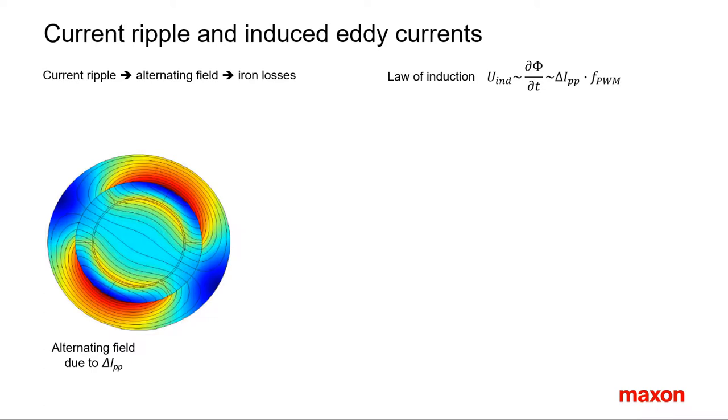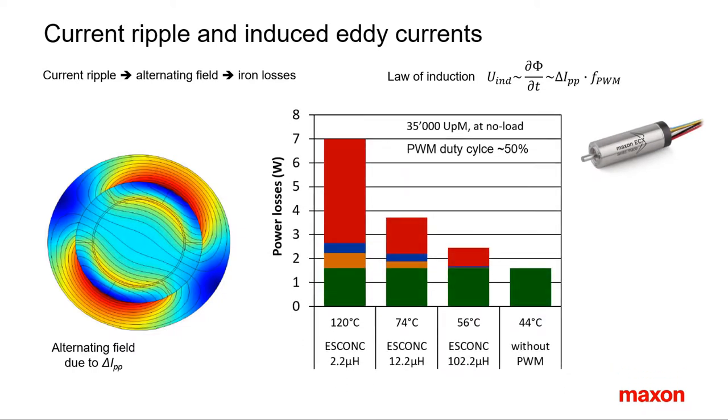The Maxon lab has tried to quantify these effects with measurements and simulations with the following results. From left to right, the additional inductances increase. The motor speed is 35,000 RPM. That's not extremely high for this motor, but the PWM duty cycle is the worst possible. It is 50%. On the right, the diagram is without PWM. Only a moderate temperature increase due to the classic iron losses stemming from the rotating magnet.